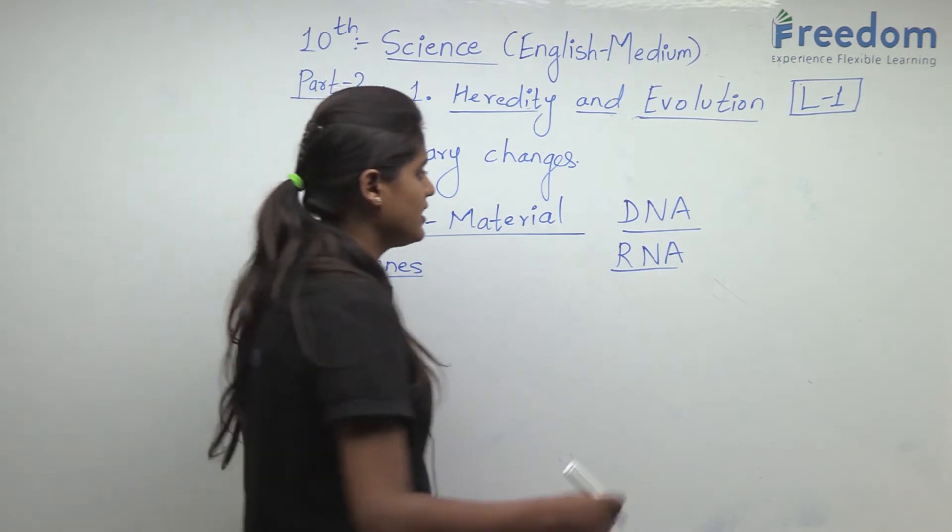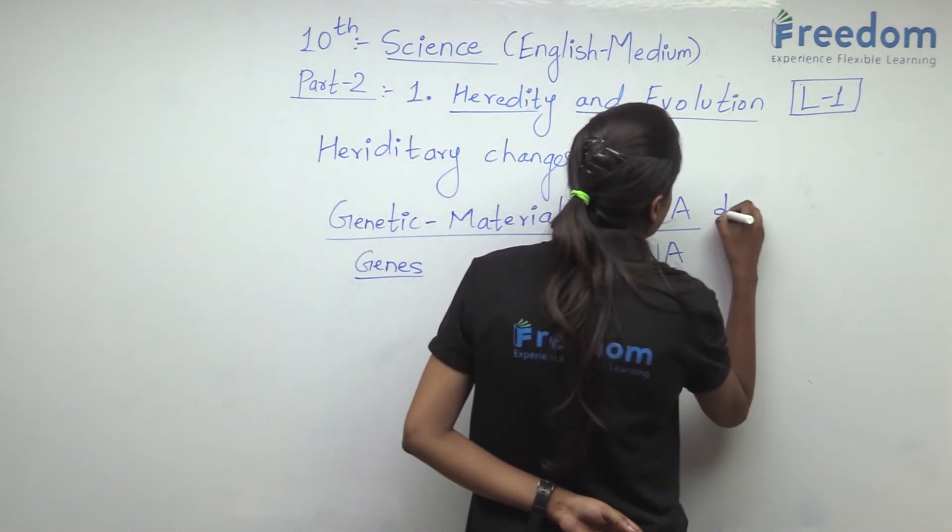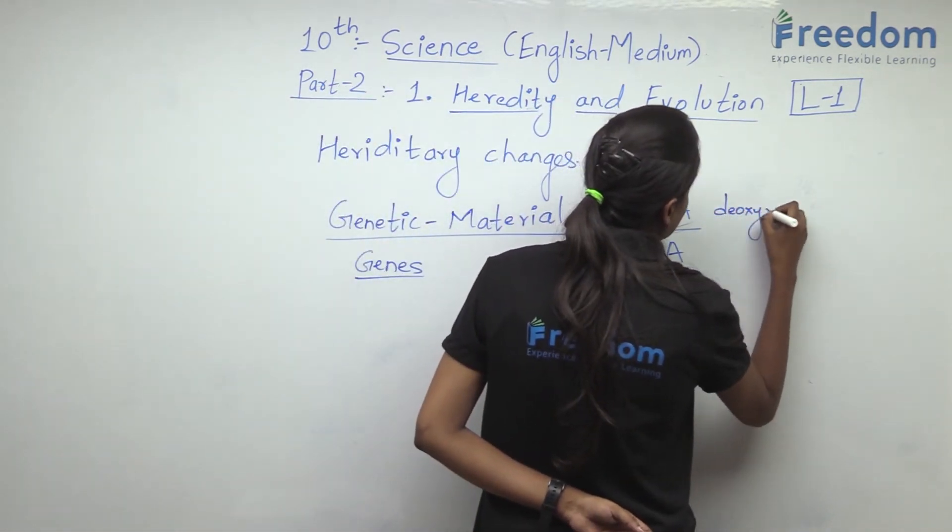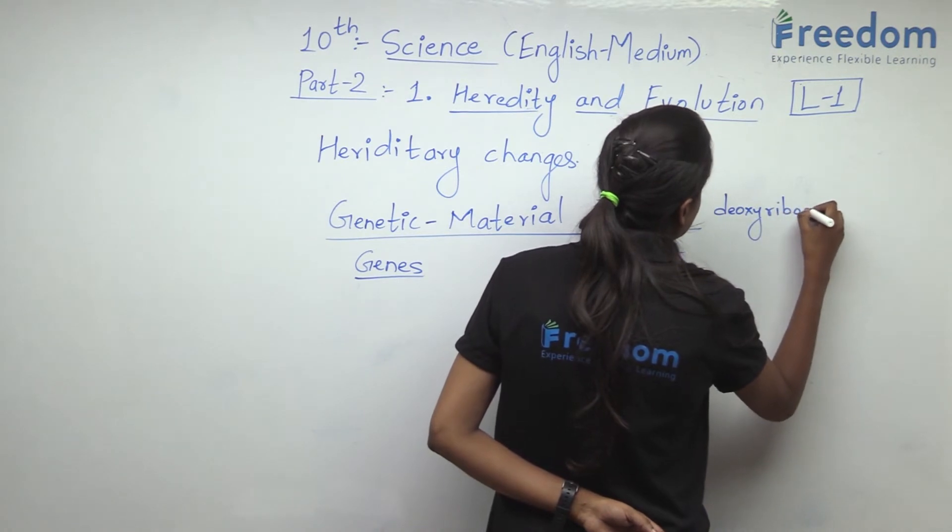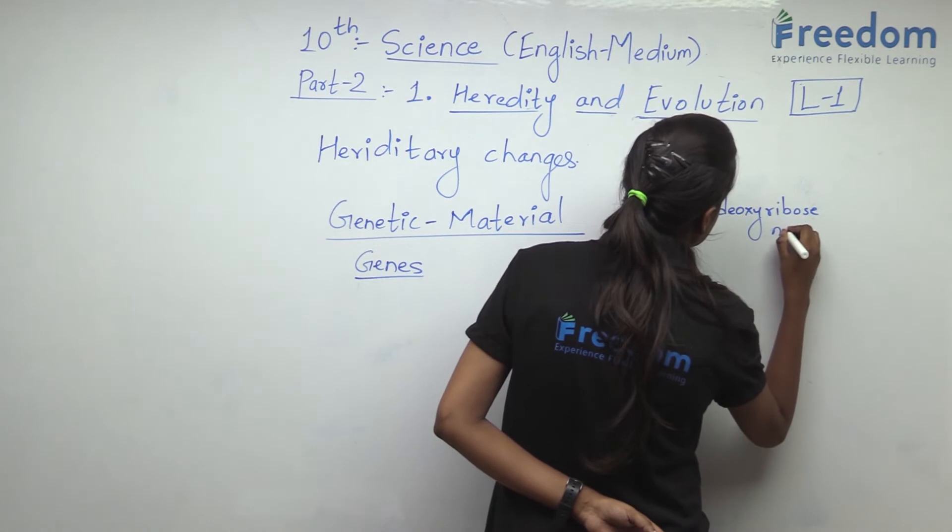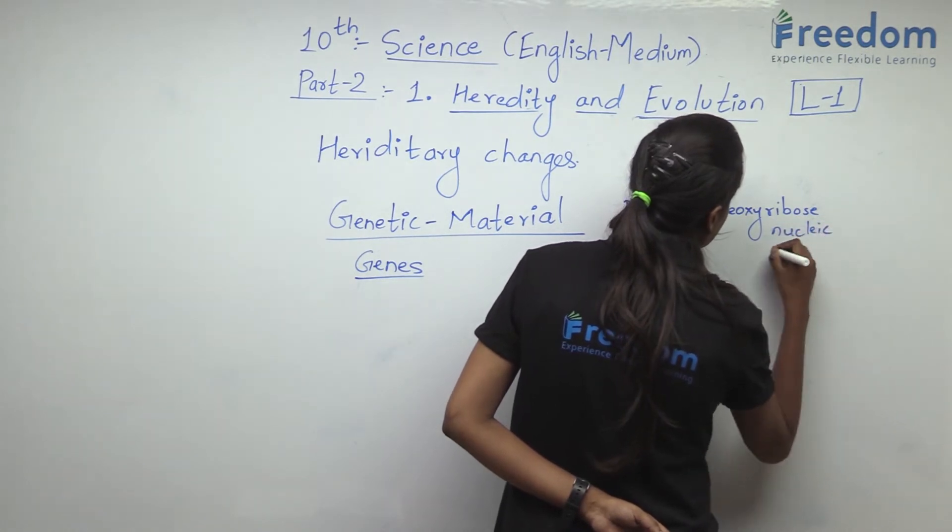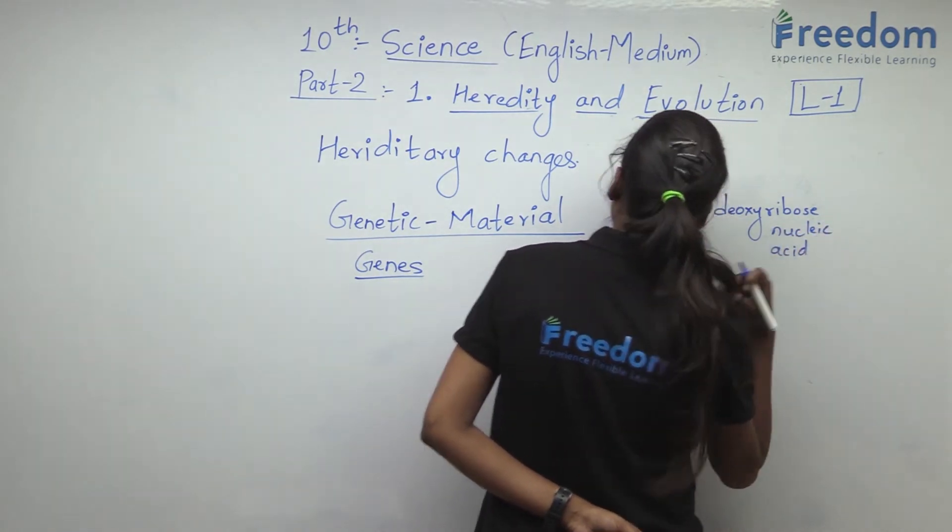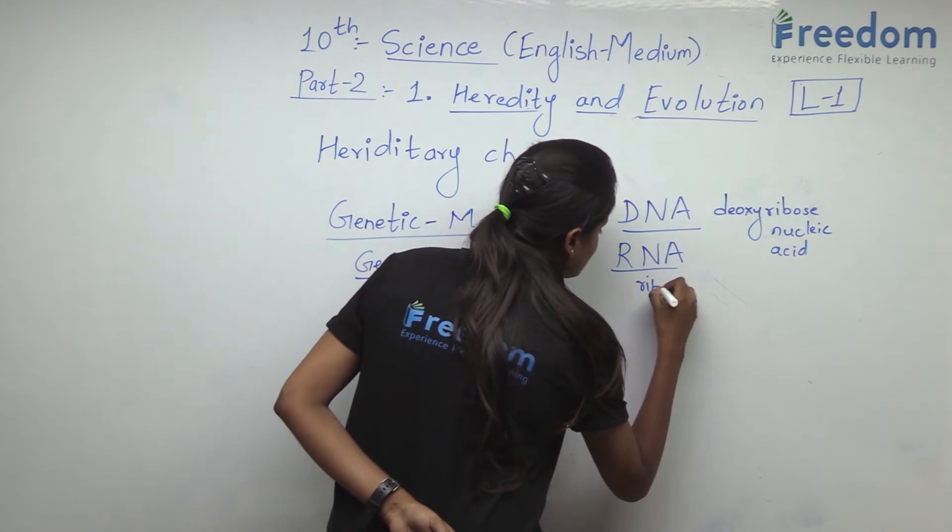So what is DNA full form? It is deoxyribose nucleic acid. And RNA is ribose nucleic acid.